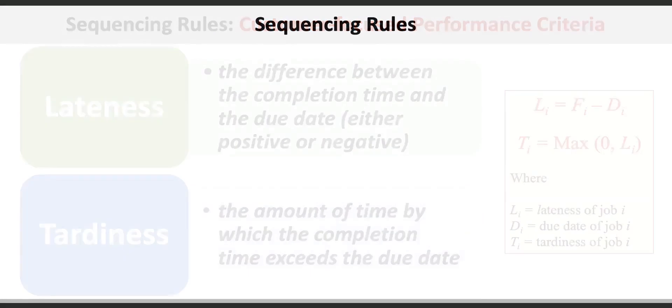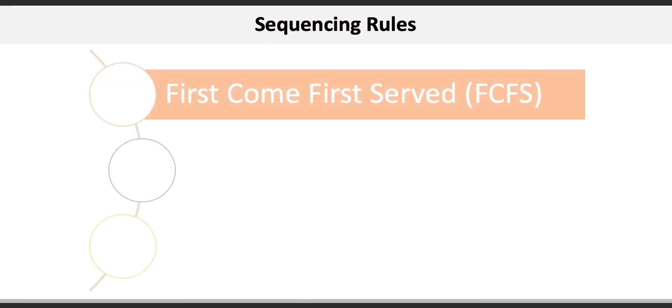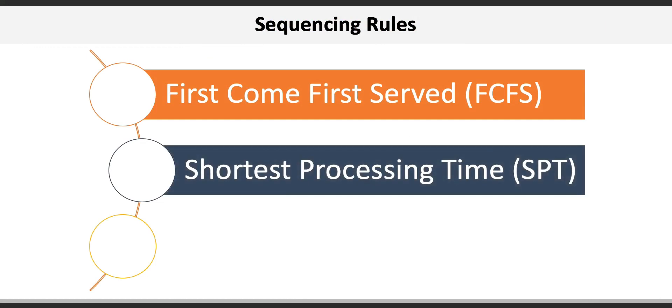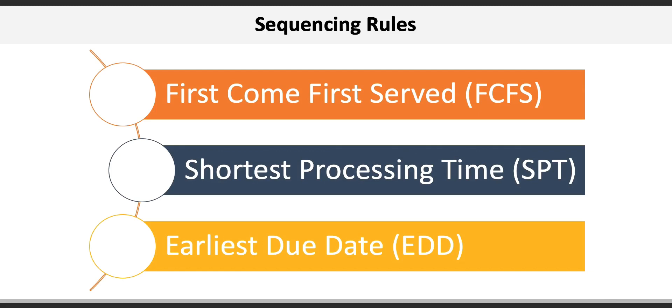There are three different rules used in sequencing. They include First Come First Served (FCFS), Shortest Processing Time (SPT), and Earliest Due Date (EDD). These rules are often applied when a fixed set of jobs needs to be sequenced at one point in time, and different sequencing rules lead to very different results and performance.